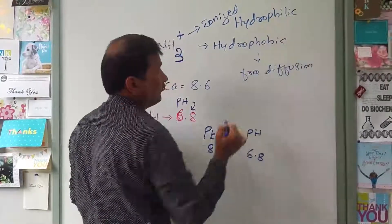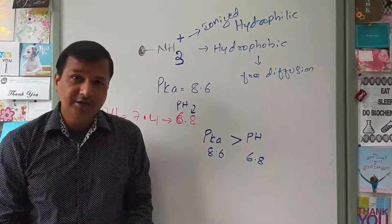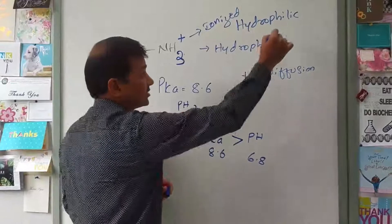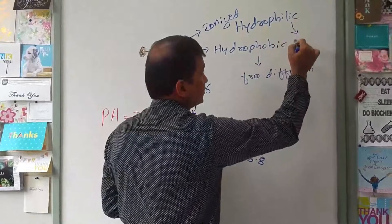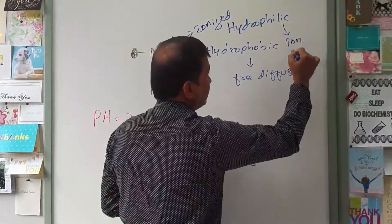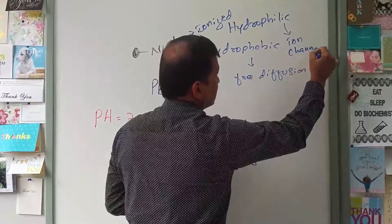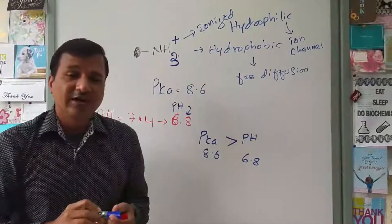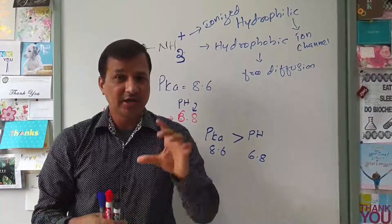Since it is hydrophilic, it cannot enter the cell by free diffusion — it has to use an ion channel. So it prefers to enter the cell using an ion channel. The question then is: where exactly within the ion channel is it going to bind?